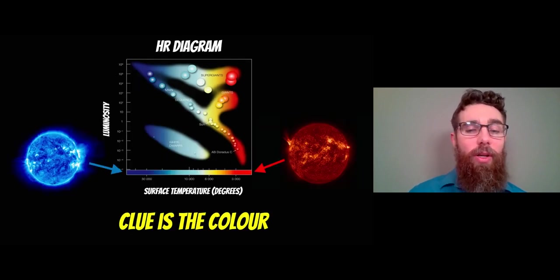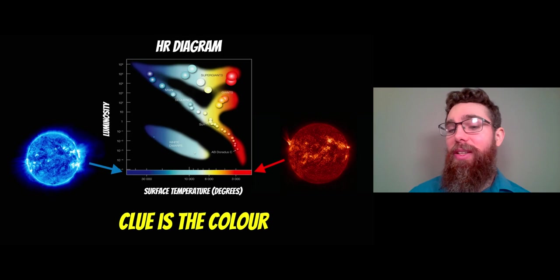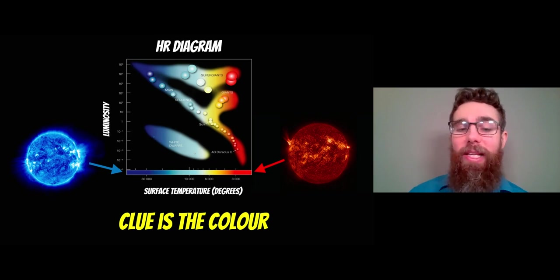Well, the clue is the color. Bluer stars are going to be hotter than stars that appear red. This is our main clue—it's the color of the star.